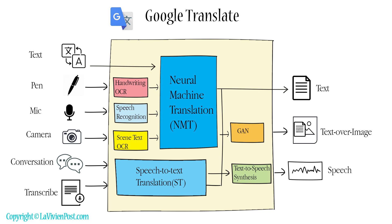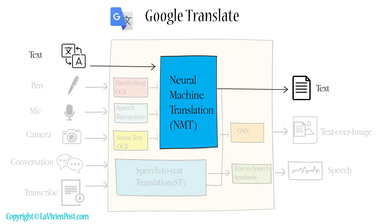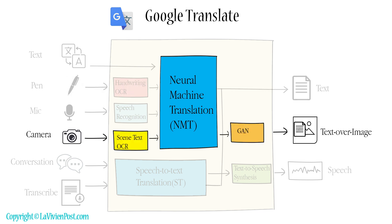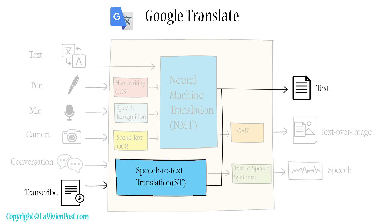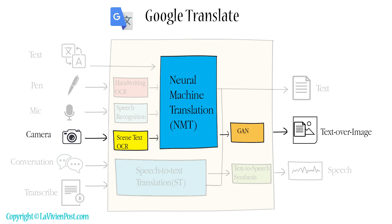These include Text for text-to-text translation; Pen for handwriting recognition and translation; Camera for text recognition, machine translation, and image synthesis; Conversation for speech-to-text translation and speech synthesis; and Transcribe for speech-to-text translation.